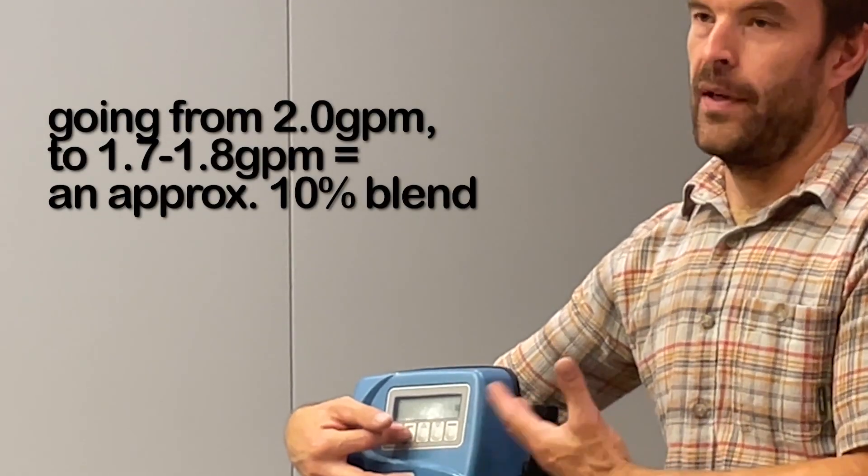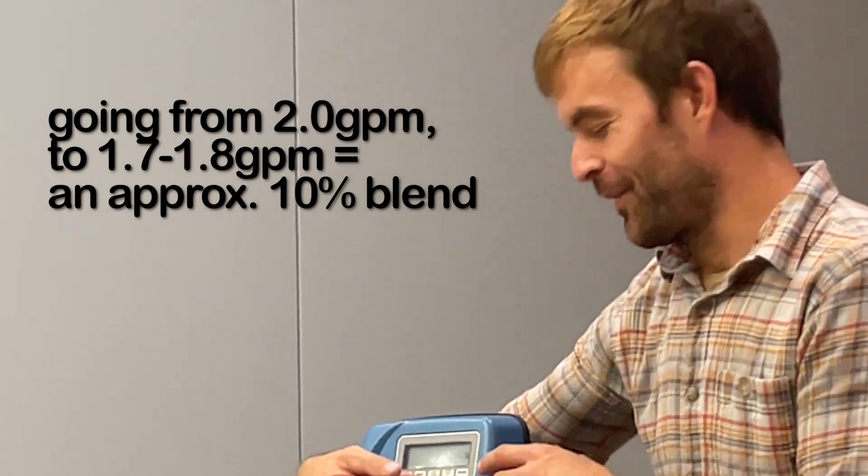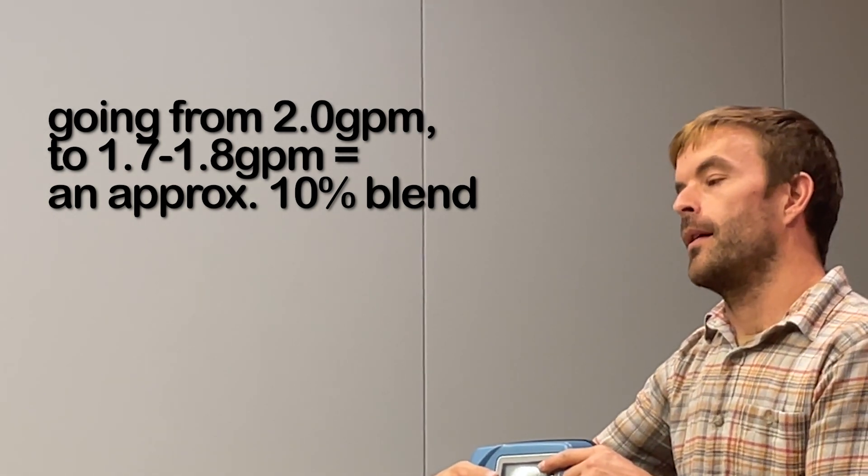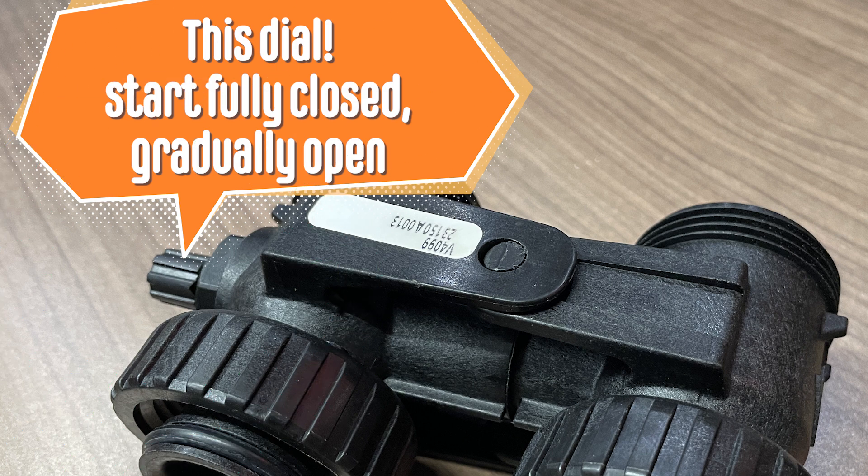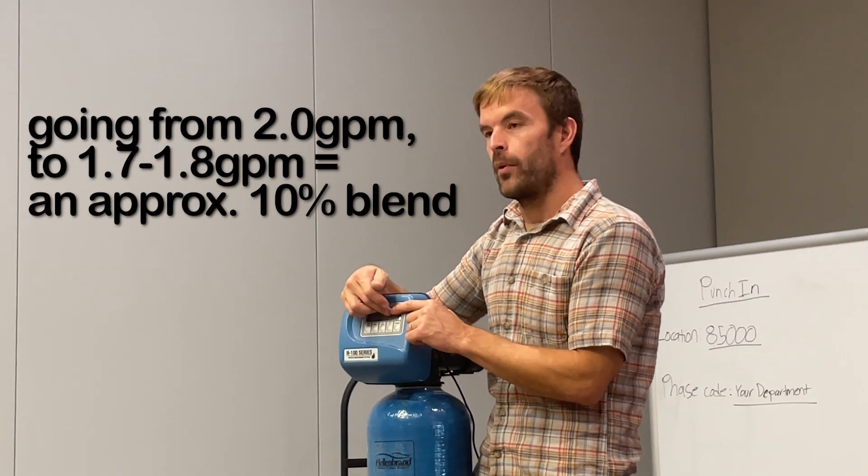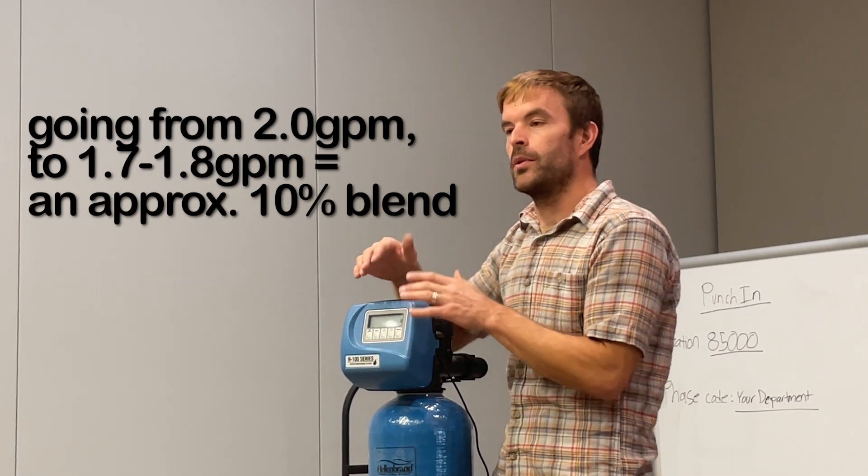I'd really recommend for easy math getting it so it ends in 0.0, like if it's 1.7. I would shoot for two or three GPM, and have it in the fully closed position. Then open it with the same flow going - open it to the point where you see this number drop from 2.0 to 1.9 to 1.8 to 1.7. That's where we're shooting for, that 10 percent blend.